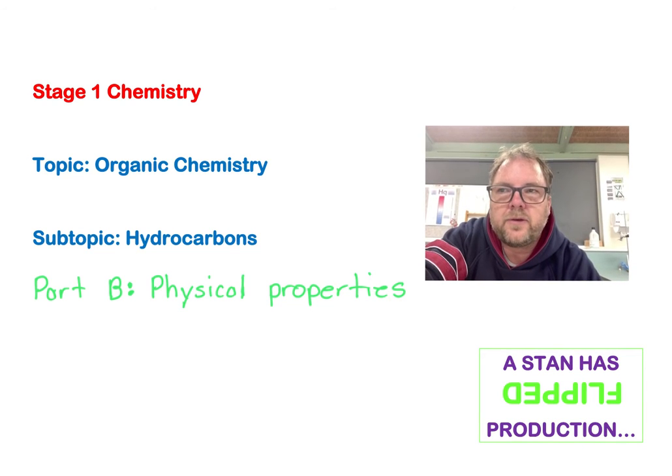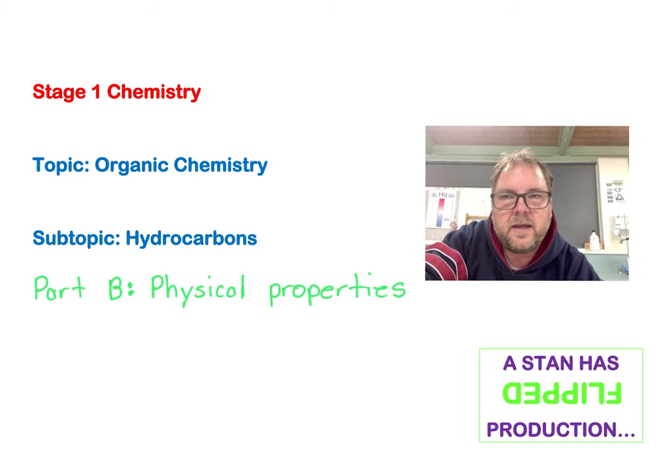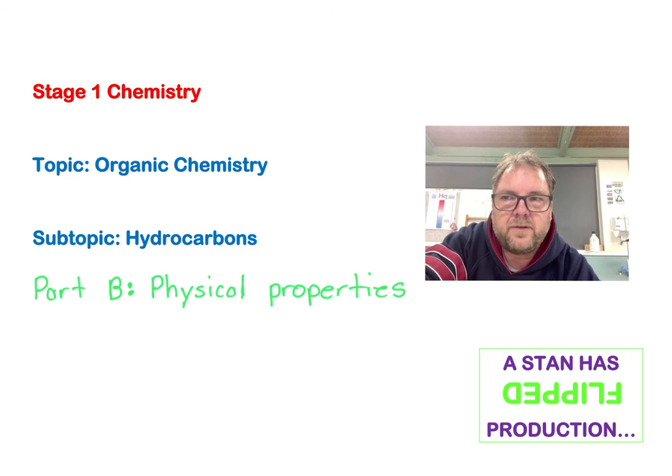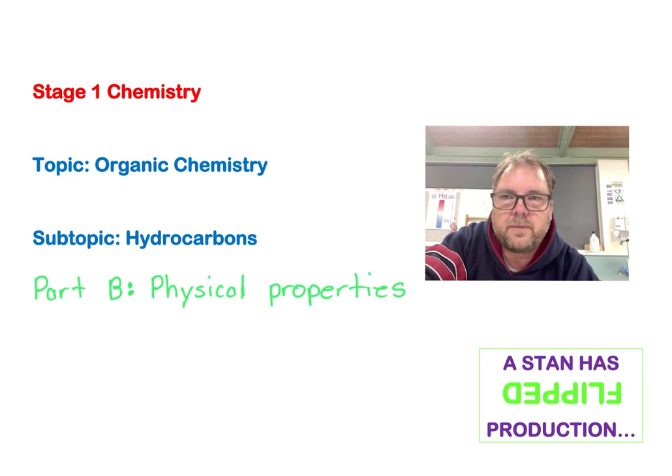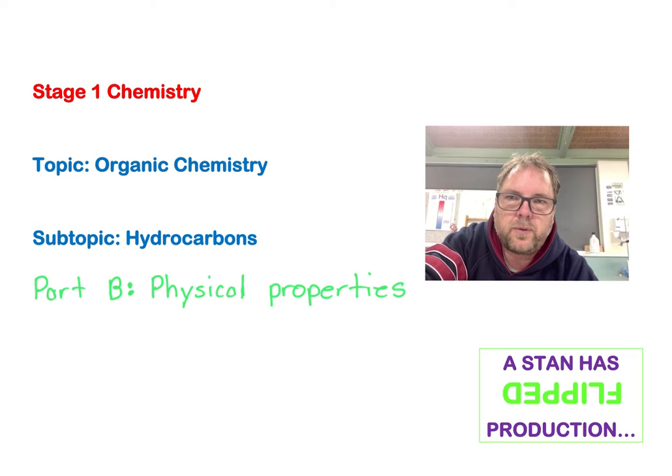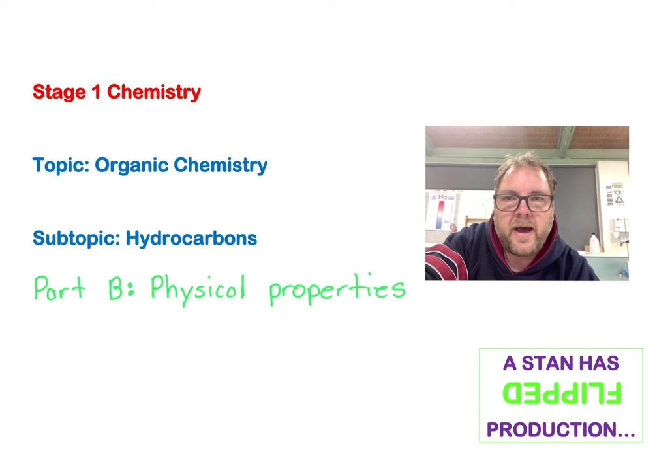Continuing to look at the organic chemistry topic and the hydrocarbon subtopic, in Part B we're going to look at the physical properties of hydrocarbons. In particular, we're going to look at the physical properties of the alkanes that we talked about before—specifically the boiling point and melting point. That's going to relate to what we looked at earlier in the year about secondary interactions.